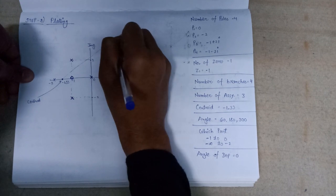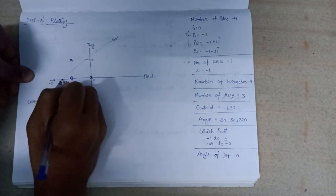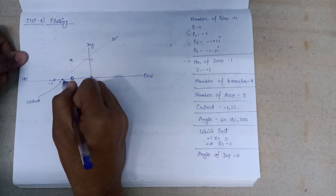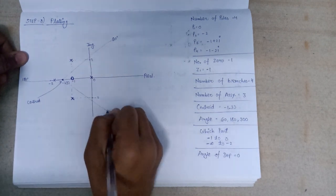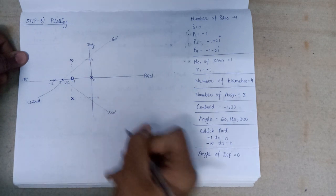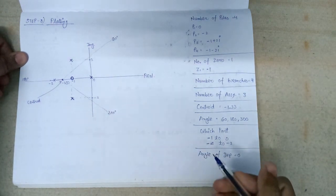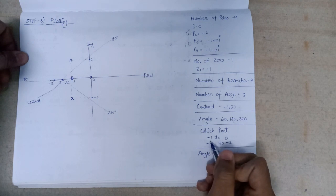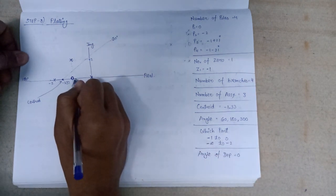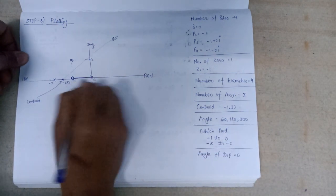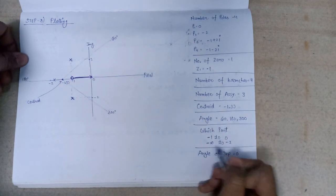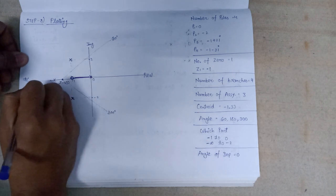And we also calculated that root locus lies from minus 1 to 0, that is in this section, and also from minus infinite to minus 2, that is in this section.